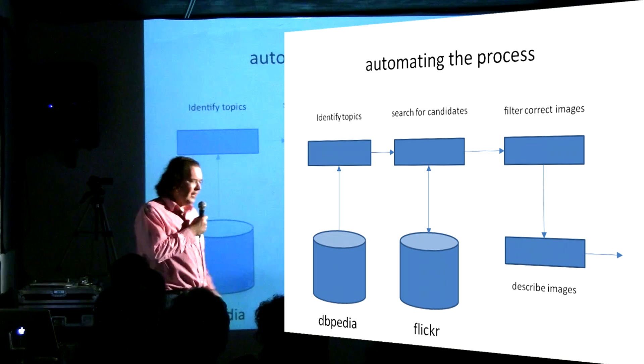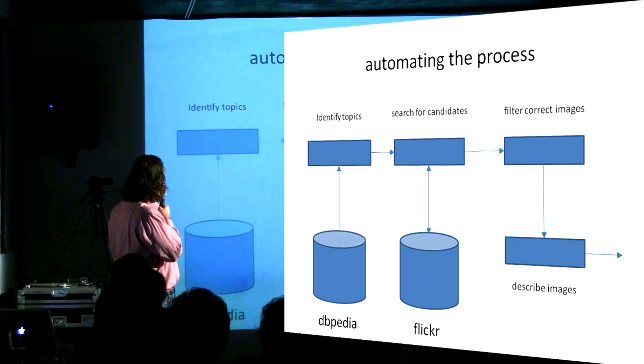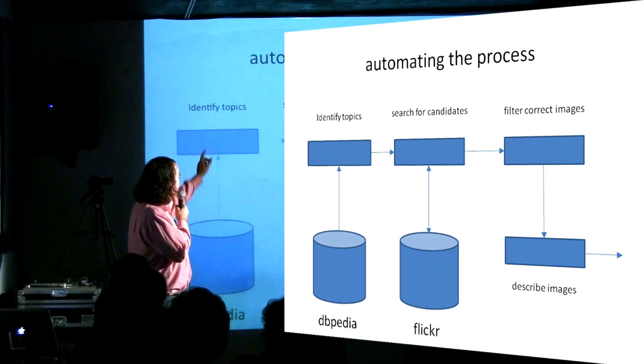There are hundreds of data sources with hundreds of billions of facts hooked together, and anybody can add new stuff to this. So I thought, how do I take this process and automate it? I got the idea to identify topics — DBpedia has a list so I can just ask for the birds, search for candidate images on Flickr, filter images from the search that are correct, and write descriptions of them.